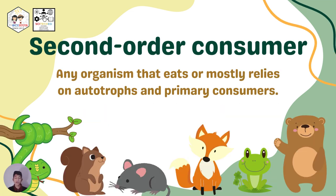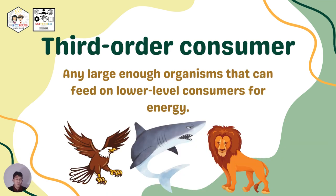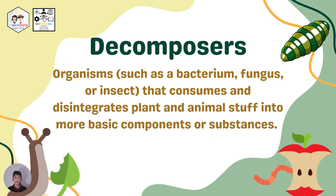Next, secondary-order consumers — any organism that eats or mostly relies on autotrophs and primary consumers. Examples include snakes, foxes, frogs, and bears. We also have third-order consumers, or tertiary consumers — any large enough organism that can feed on lower-level consumers for energy.